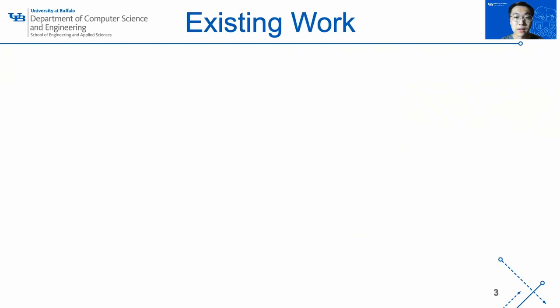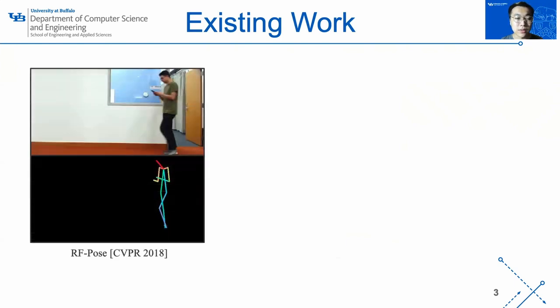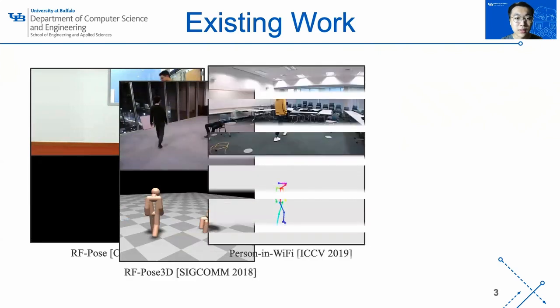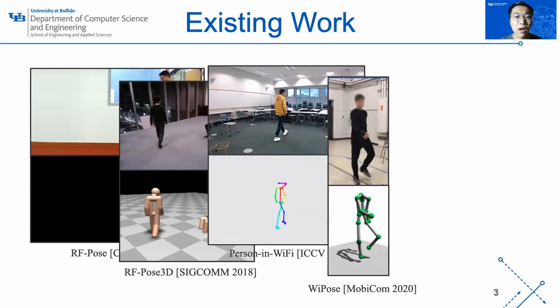For existing work, thus far, the most remarkable achievement in this effort is the construction of human skeletons. The existing work includes RF pose, RF pose 3D, person in Wi-Fi, and Wi pose. However, in this paper, we attempt to construct 3D human mesh from the RF signals instead of human skeleton, because even though the skeleton can provide pose information of the subject, it lacks shape and gender information of the subject to reconstruct a realistic human. For example, the human mesh can enable more realistic AR and VR applications by capturing the player's body shape and pose.